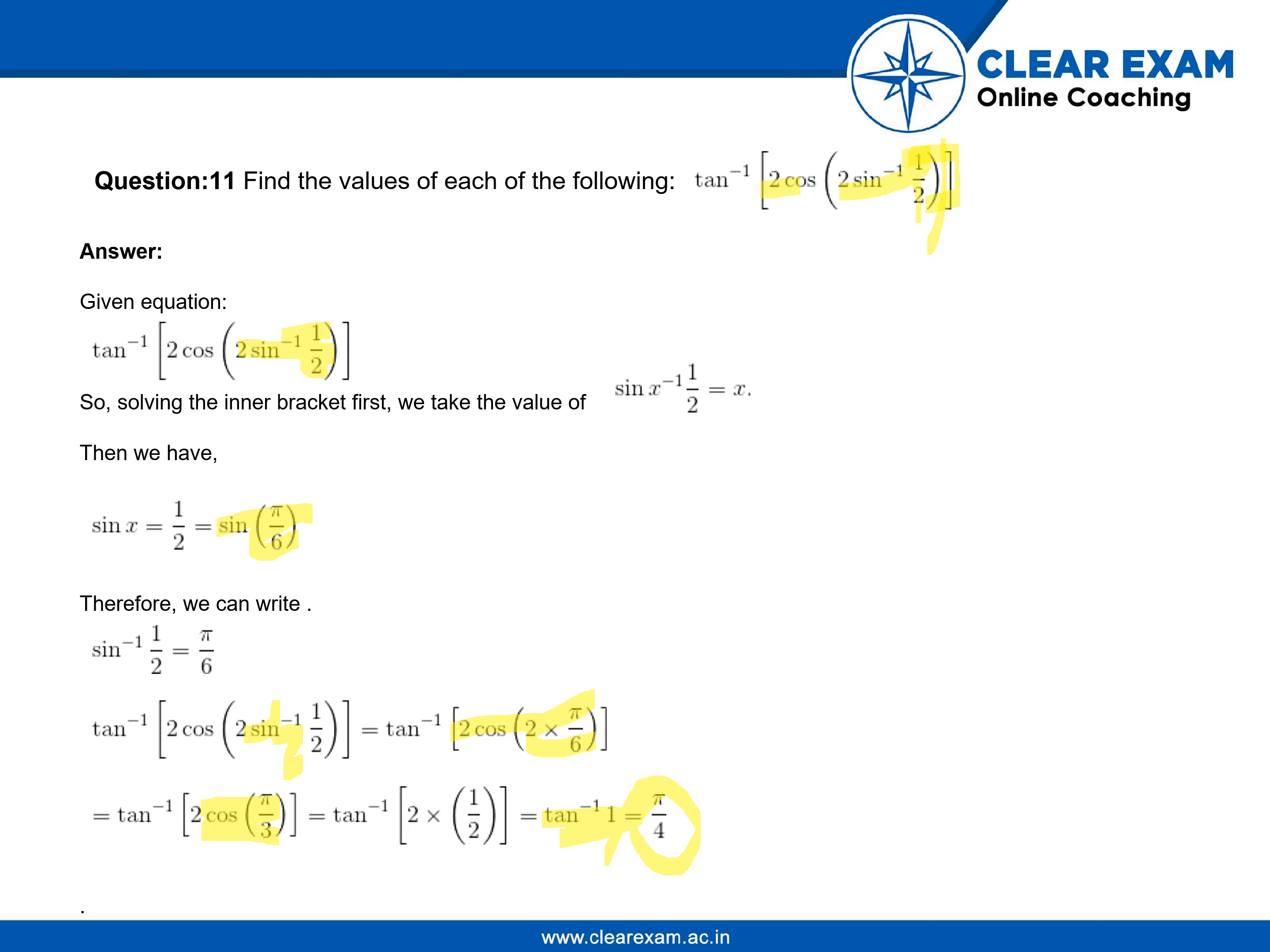Hence, we have to know the values of these trigonometric functions, which makes this question very easy. So in this way, the value for tan inverse 2 cos 2 sin inverse half is pi by 4. Thank you friends.